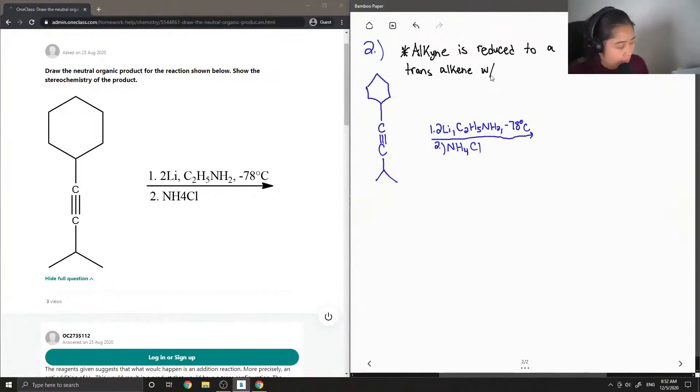I'll draw out the mechanism to show how the reaction takes place. And this happens with a very strong reducing agent. The catalyst is lithium metal. So the ethylamine solvent is our reducing agent.